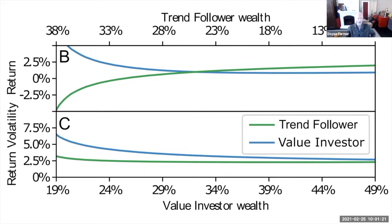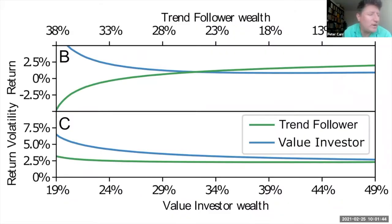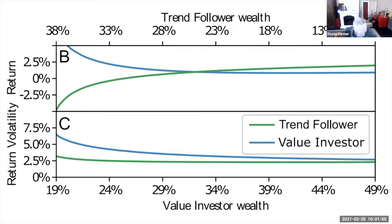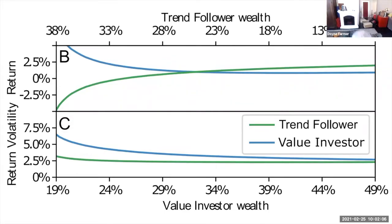At that efficient point, the volatility of the profit streams of those agents behaves differently — both are actually monotonically decreasing as the value investor's wealth goes up. This shows an asymmetric effect of these strategies on the market. I'm calling it efficient because nobody's making an excess return. Under a more sophisticated definition incorporating utility functions and risk, you'd need to adjust, but there should still be some equilibrium point.